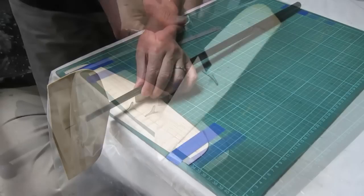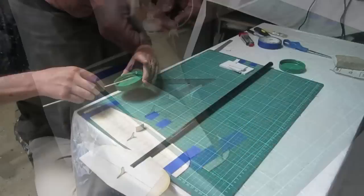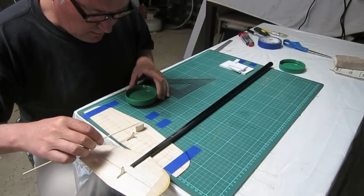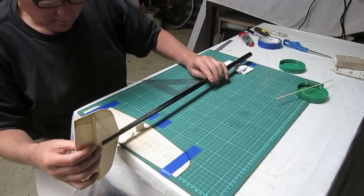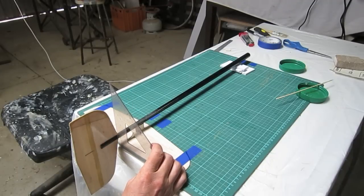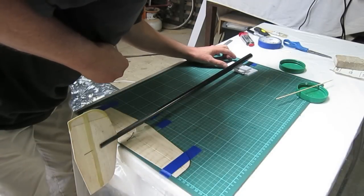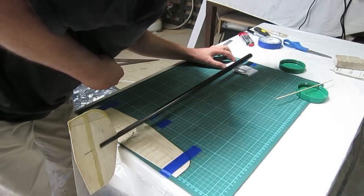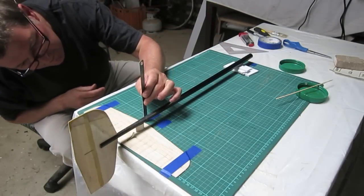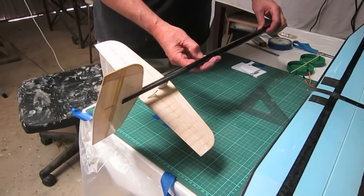Now this step is quite crucial, gluing the boom on. The vertical stabiliser needs to be 90 degrees to the horizontal stabiliser, and the boom needs to be 90 degrees to the horizontal stabiliser. The height of the boom needs to be lifted up at the front to make it level all the way along, measured from the center of the boom. Okay, that all went well. It should look something like this.